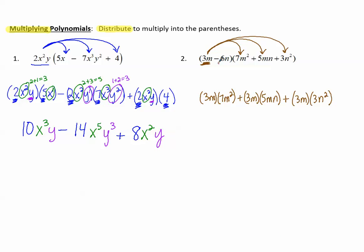Then we'll need to distribute the -6n to the three terms in the trinomial. So -6n times 7m². So minus 6n times 7m². And then -6n times positive 5mn. So minus 6n times 5mn.